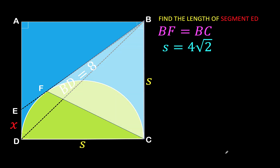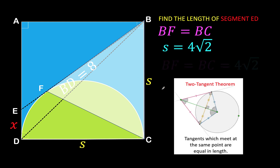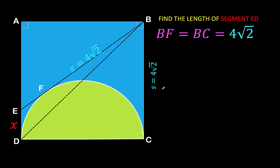Looking at segment BF and BC again — we know they are equal, and we established that BC equals S, which is 4√2. That means BF is also equal to 4√2. So from point B up to the point of tangency F, the length is 4√2.